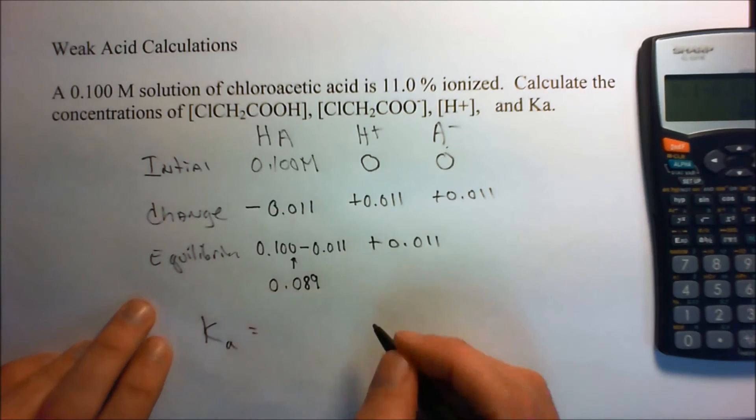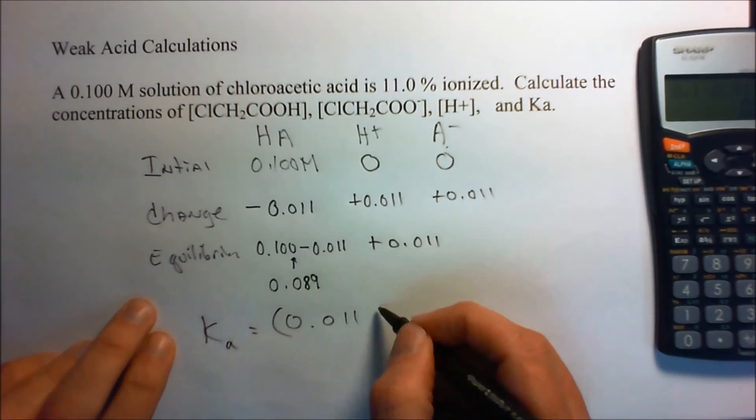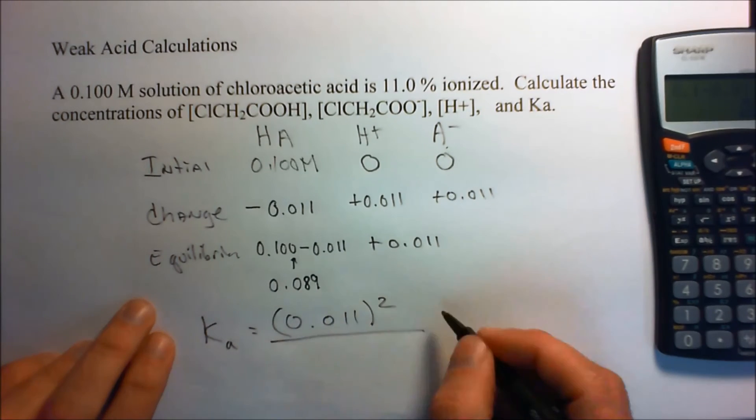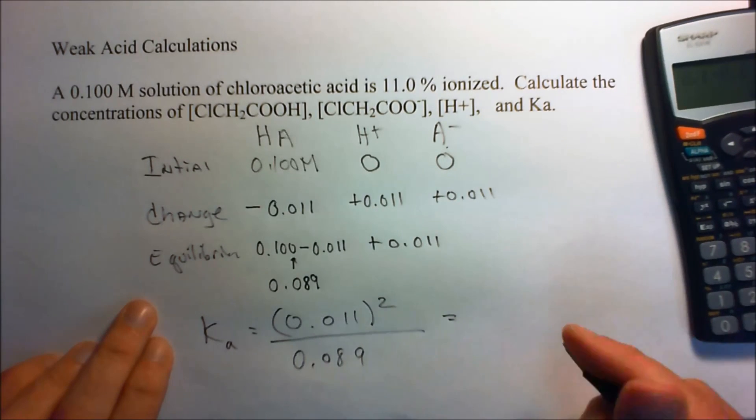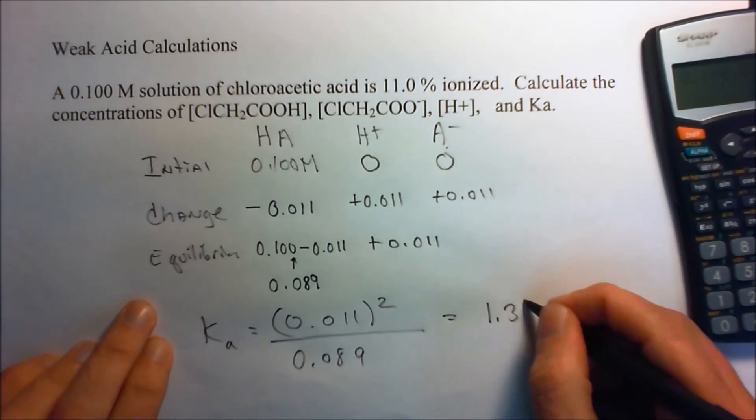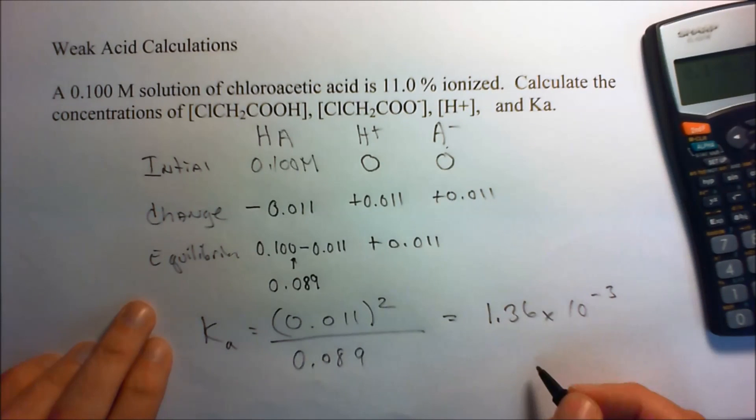So what's our Ka? Well, we're going to just put these guys in, 0.011, square it up. Remember it's products over reactants. The product is this, and here we go for the undissociated acid. Plug that into our calculator, and we get 1.36 times 10 to the minus third, or you can round it to 1.4.